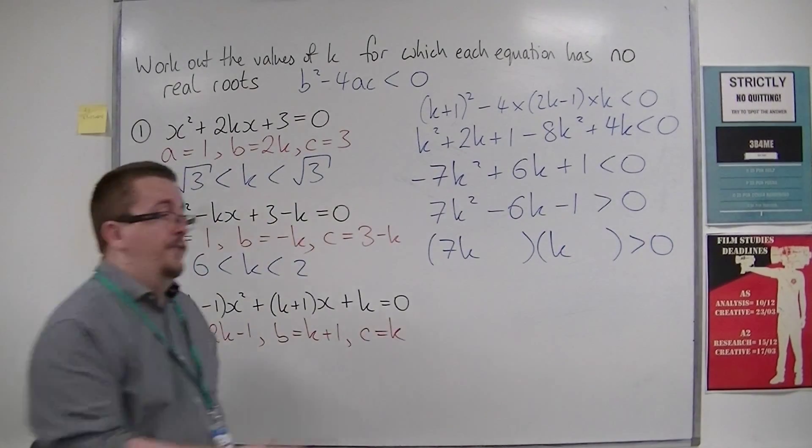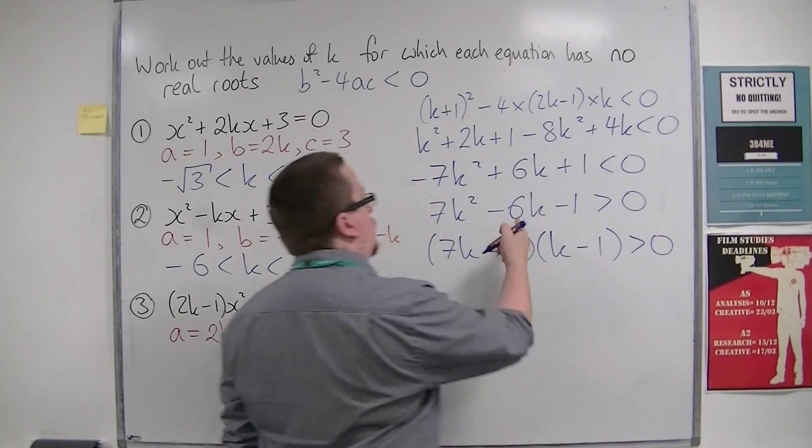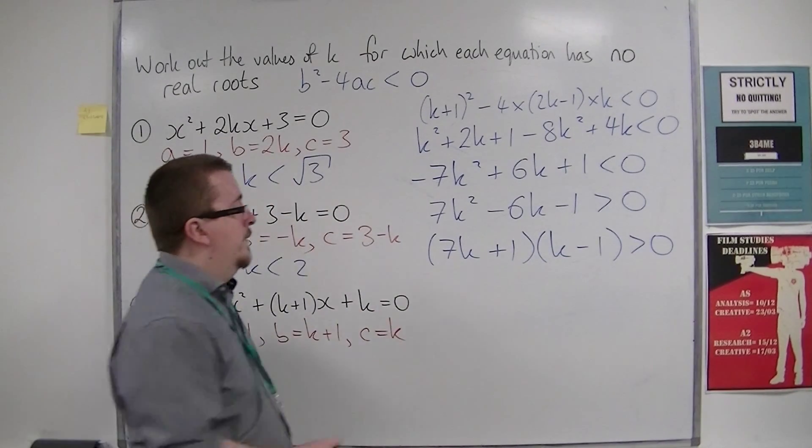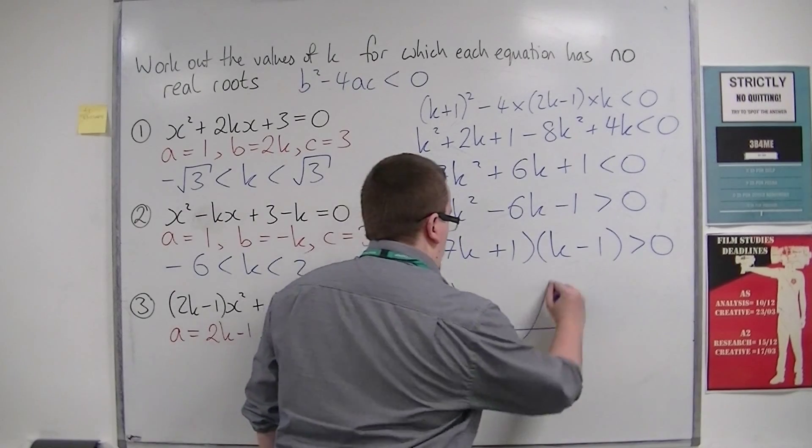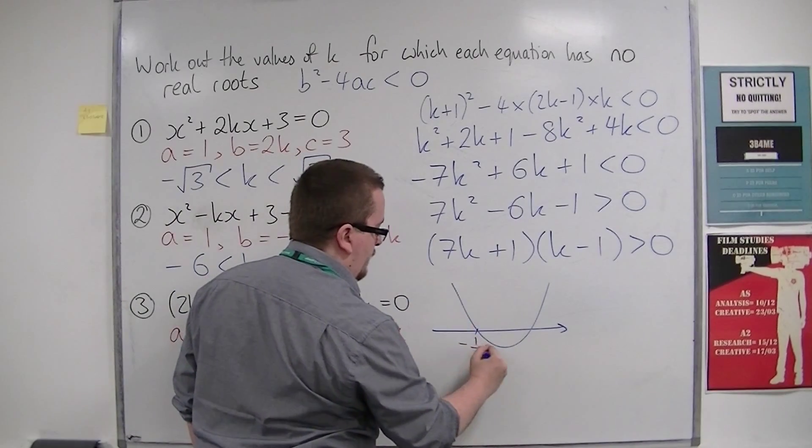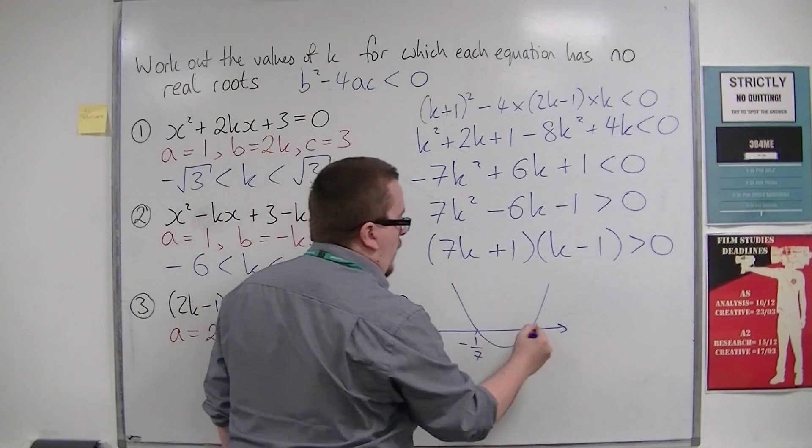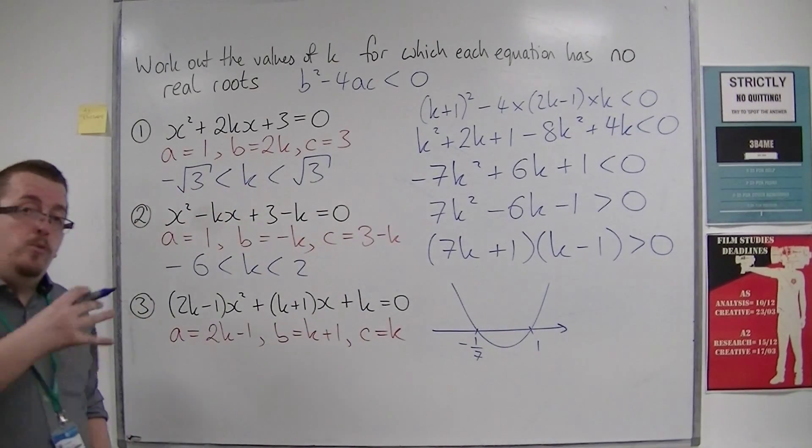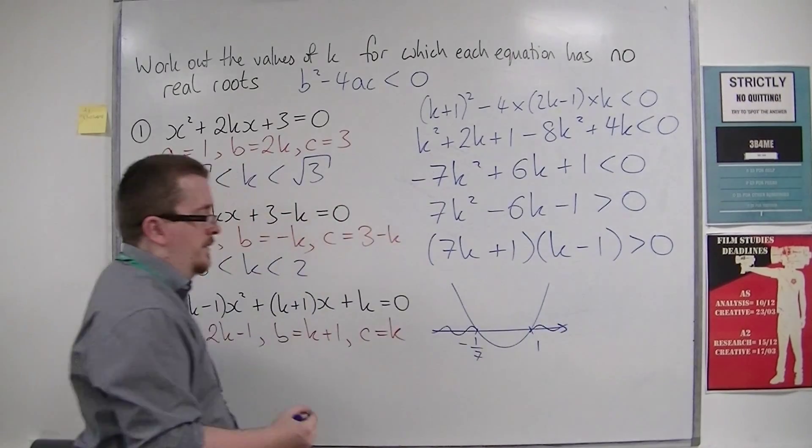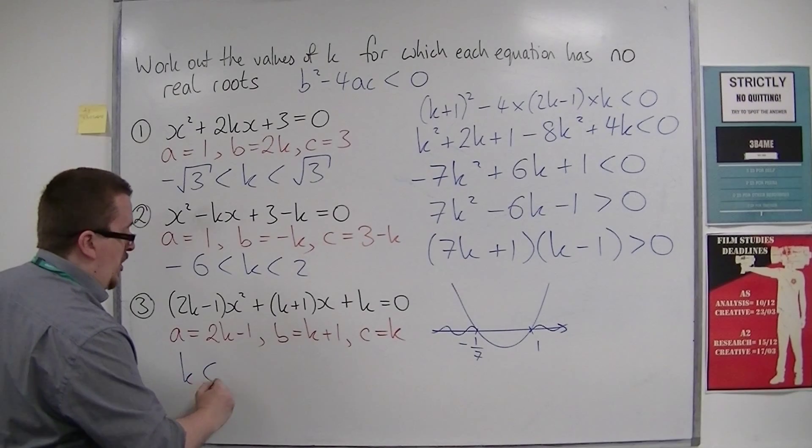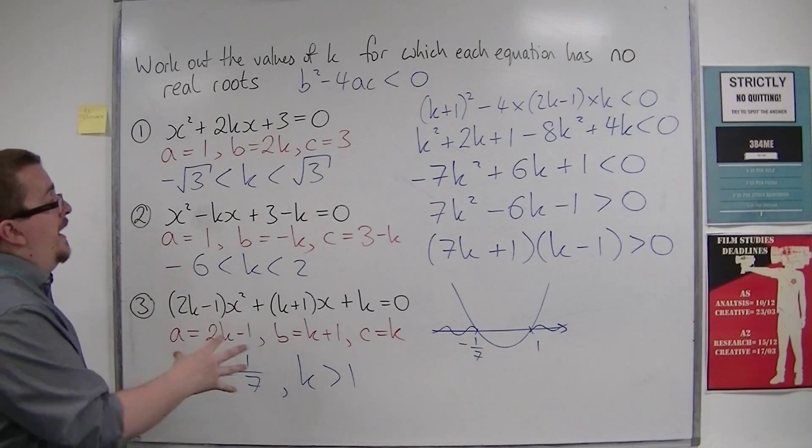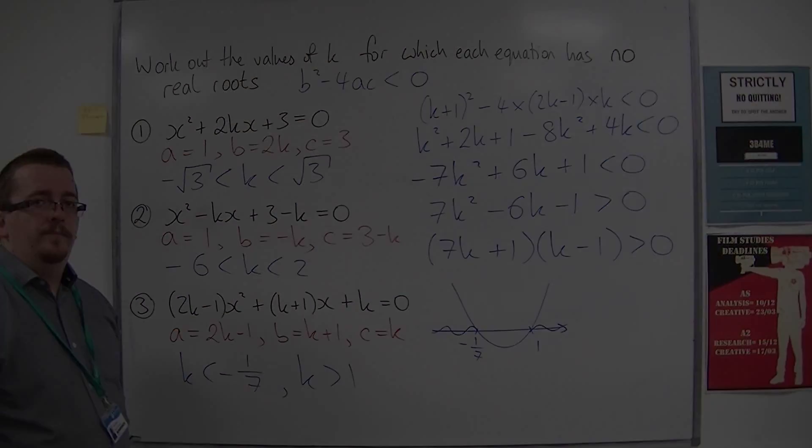This should factorize. We're going to have -1 and +1 in order to get that -6k. 7k × -1 and then +1k. Now sketch it. This will bring about -1/7, and that will bring about 1. Where is the parabola above the k-axis? It's above it there and there. Two regions, two distinct inequalities. That is how we can solve these types of problems.